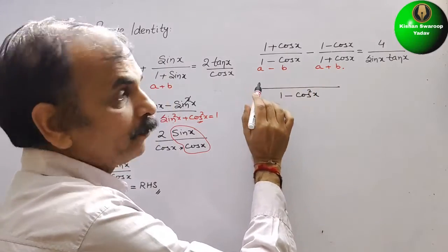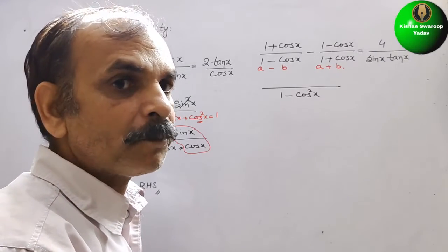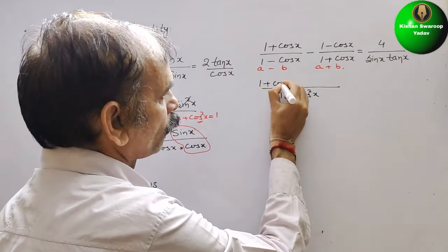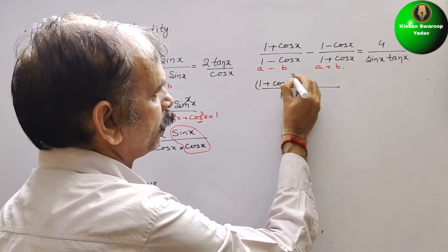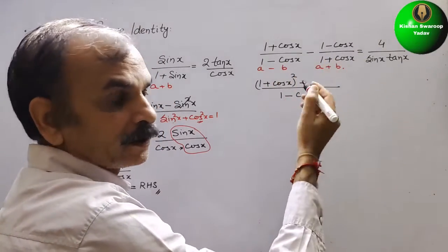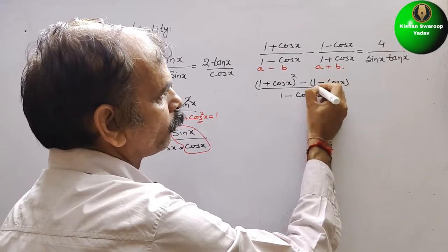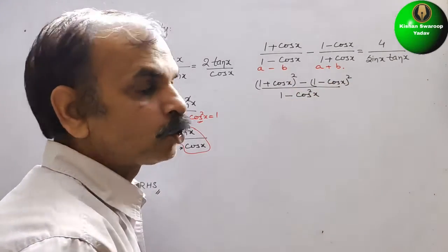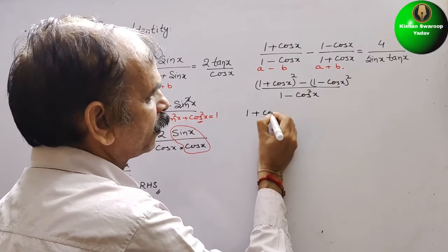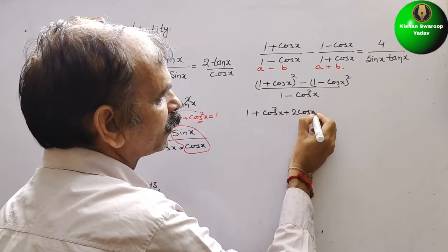Now cross multiply. So here it is (1 + cos x) × (1 + cos x) = (1 + cos x)² in the numerator, minus (1 - cos x) × (1 - cos x) = (1 - cos x)². Now expand using (A + B)² and (A - B)² formulas. So we get 1 + cos²x + 2 cos x in the first part.